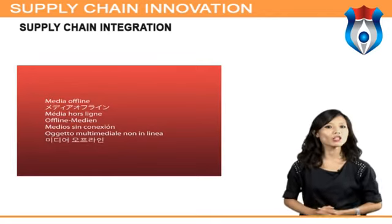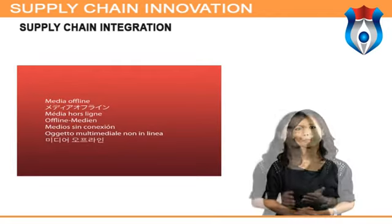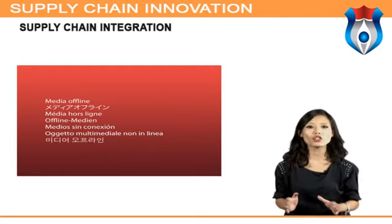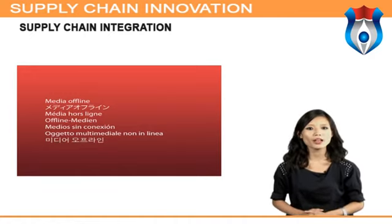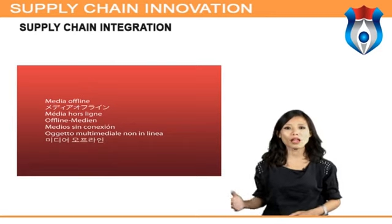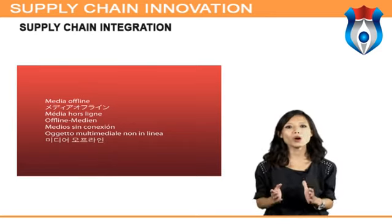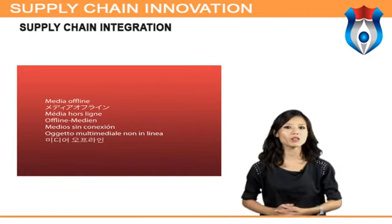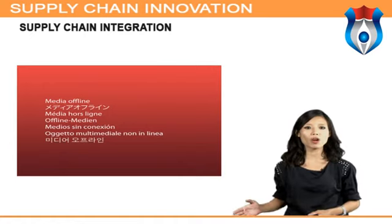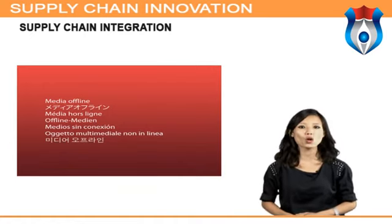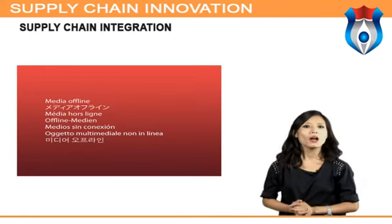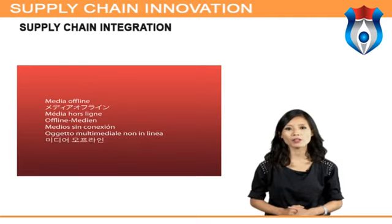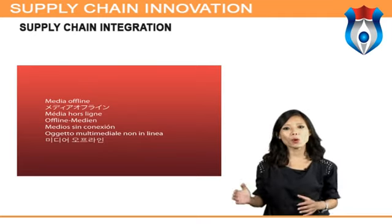Internal integration — the function-to-function integration within the focal firm — is the first step of operation integration and also the basis for the success of supply chain integration. High internal integration can reach a level of collaborative internal operation, with which the whole firm works like an integrated system, resulting in better performance and better interdepartmental effectiveness, such as cycle time reduction, better in-stock performance, increased product availability levels, and improvement in order-to-delivery. High internal integration is also the foundation of high external integration.